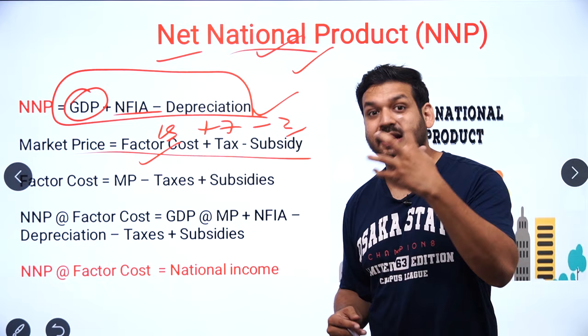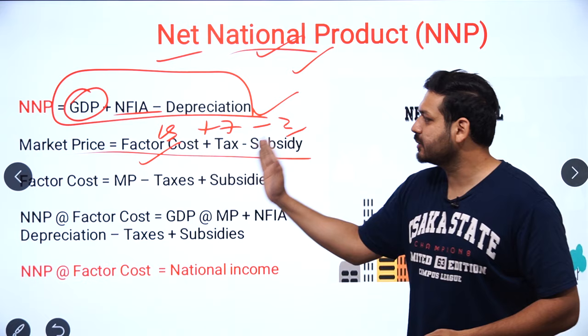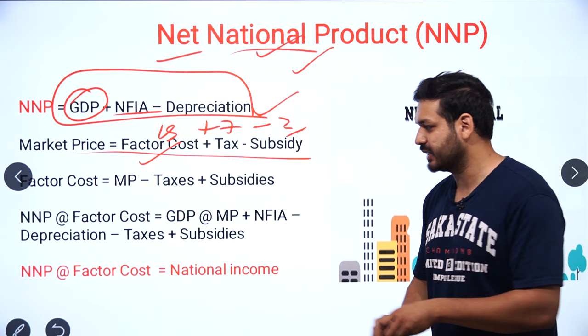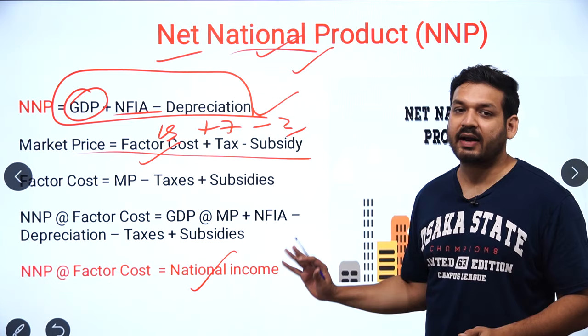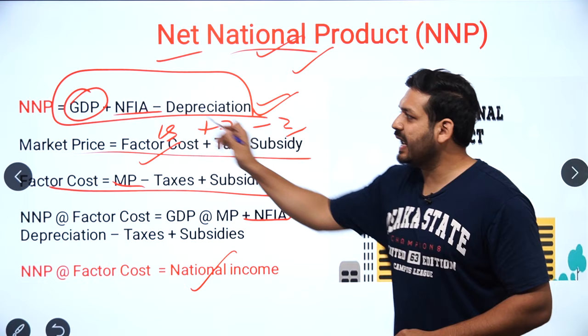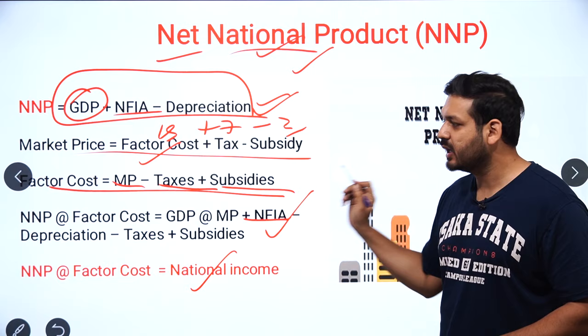So if you want to calculate factor cost, the formula is: Factor Cost equals Market Price minus Taxes plus Subsidy. This is the national income formula and you should remember it.